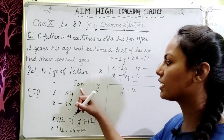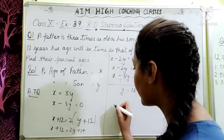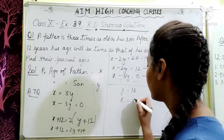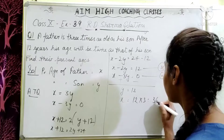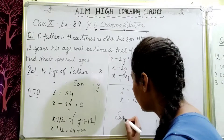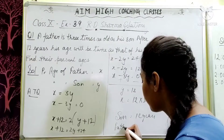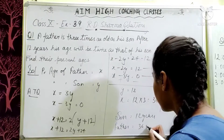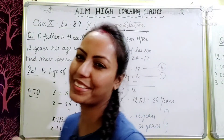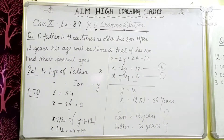y is son's age, so son's present age is 12 years. Father's age = 12 × 3 = 36 years. Always mention your answers: son = 12 years, father = 36 years. If you don't mention this, your answer may not be considered and marks will be deducted.